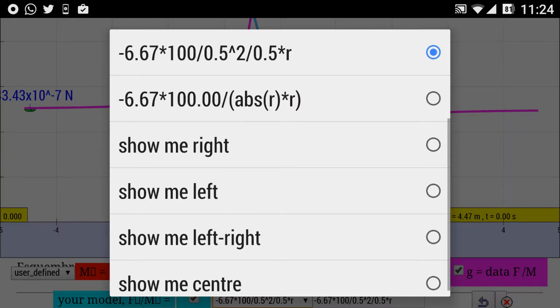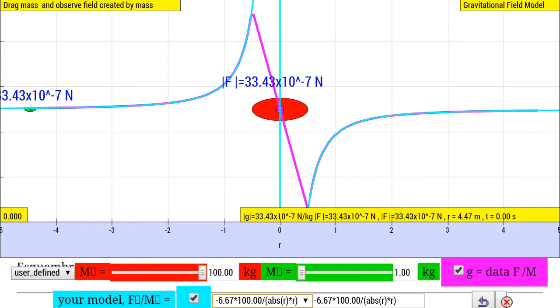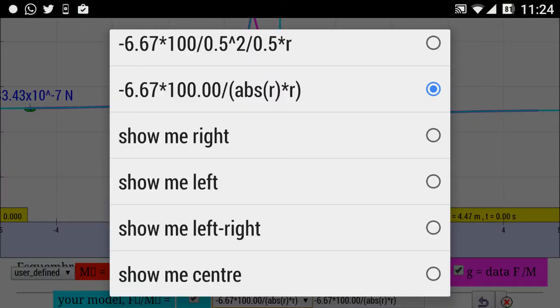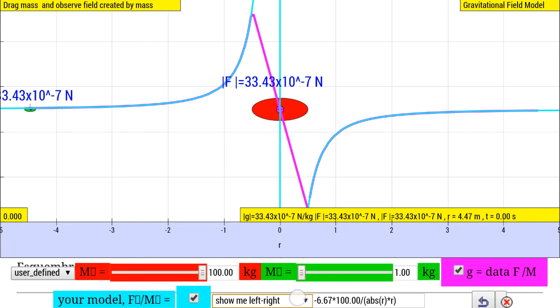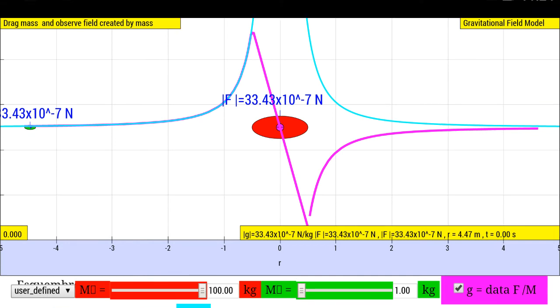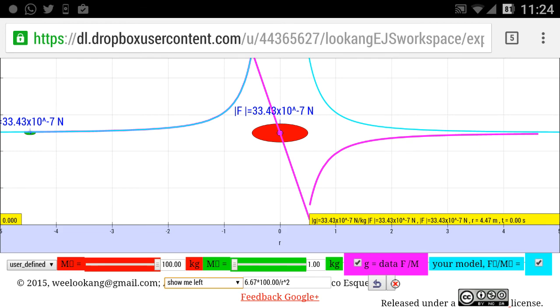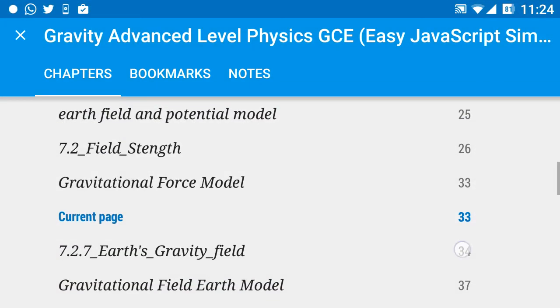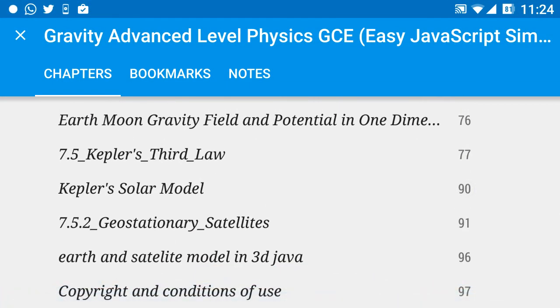You can select different equations and find how you can get the equations out. To get back to the ebook, click on the back button, then click back again to return to the ebook, which you can get for free via the Google Play Book Store.